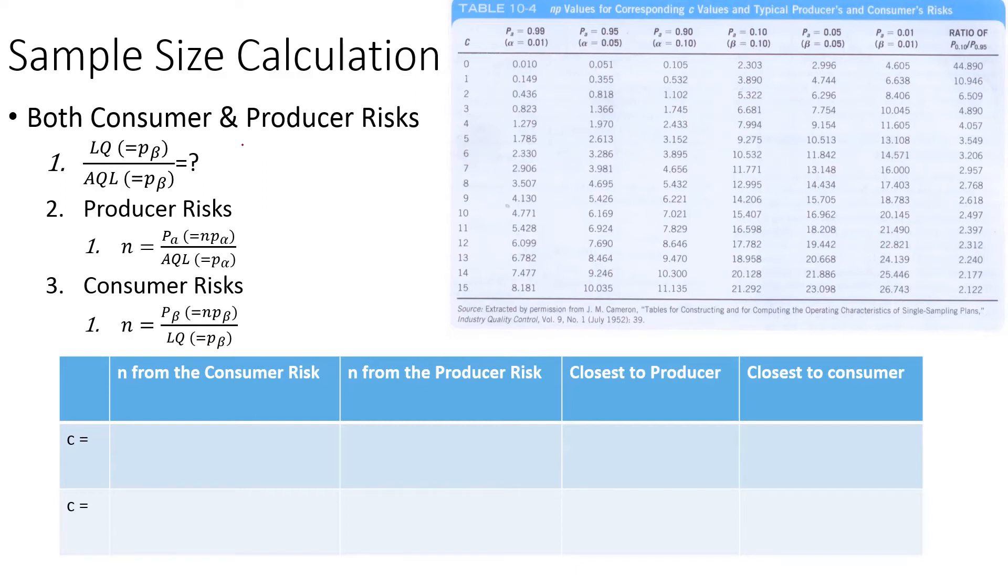I'm going to show you how to calculate sample size based on both consumer and producer risk. Imagine we have a typical producer risk alpha of 0.05 and consumer risk beta of 0.1. Alpha is associated with the AQL, the producer acceptable limit of 0.9%, and beta is associated with the consumer acceptable limit or rejectable quality of 7.8%.